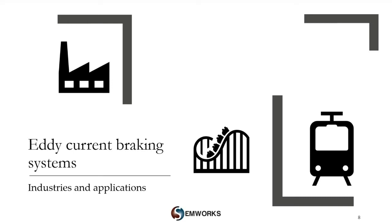Power tools and large industrial machinery use eddy current braking technology for several applications. One of the main uses is an emergency shutoff. Power tools have significant safety concerns, making the emergency shutoff a must-have feature. If a power tool such as a saw or drill is shut off, eddy currents kick in and safely bring the machine to a halt.